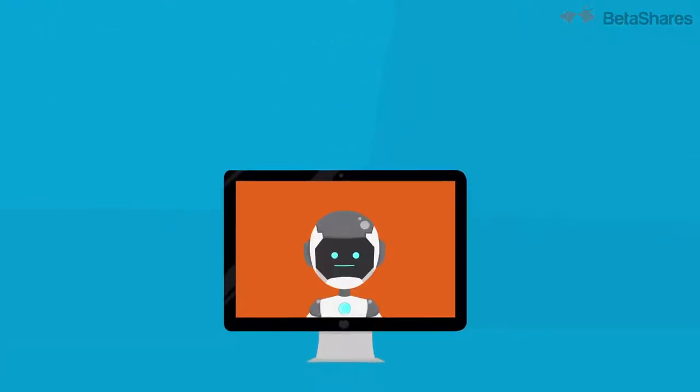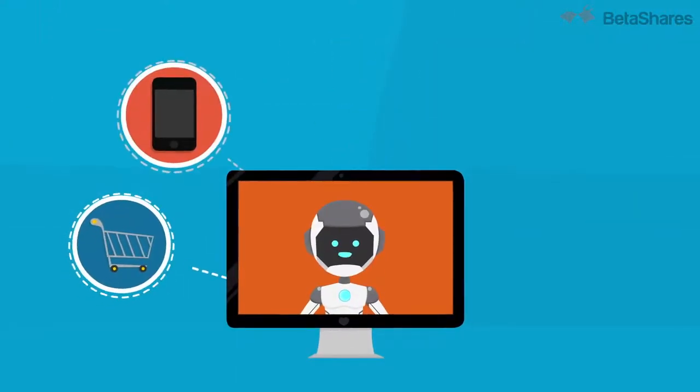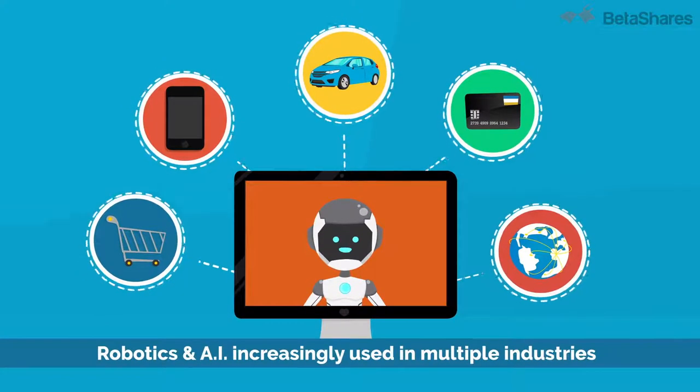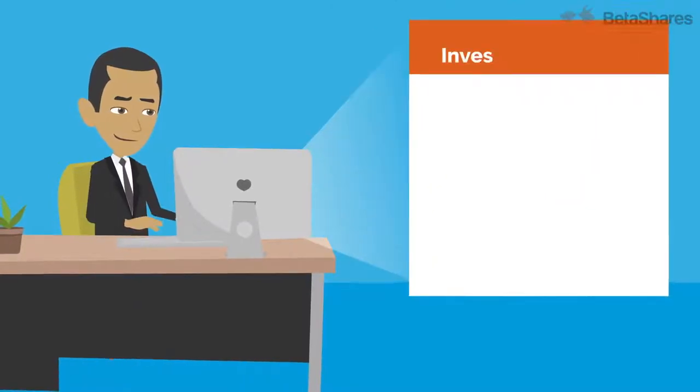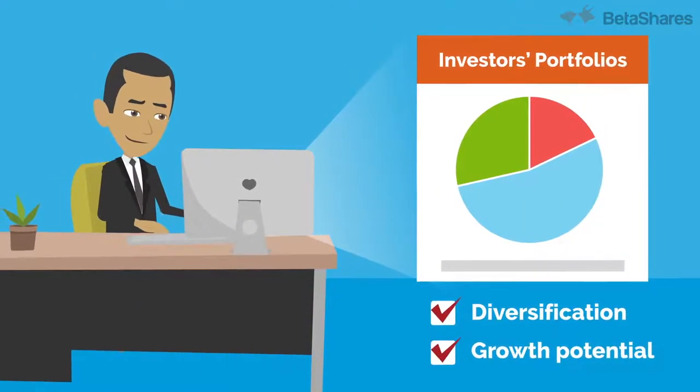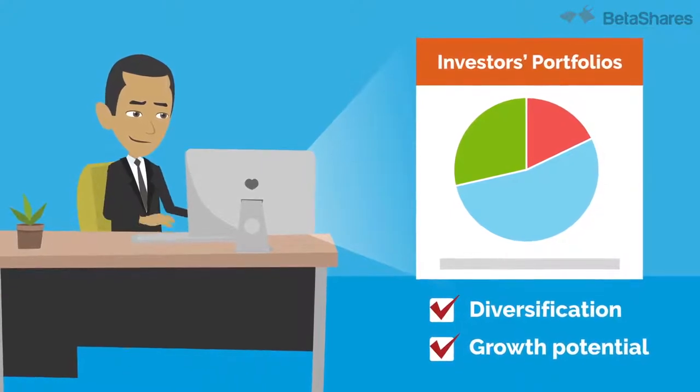Companies in multiple industries are increasingly adopting robotics and AI solutions as they seek to boost productivity and efficiency. It's a mega-trend that's here to stay and presents a source of diversification and growth potential for Australian investors' portfolios.